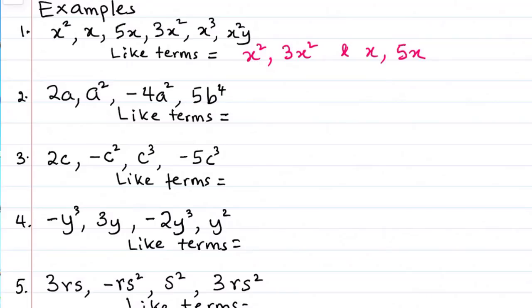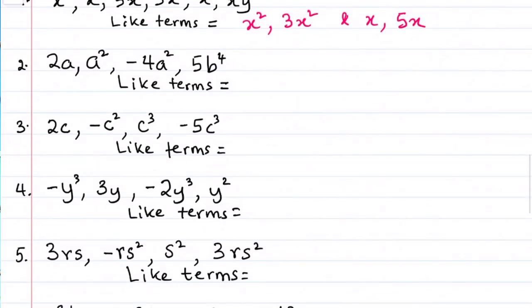So let's look at example number two. We have 2a, a squared, minus 4a squared, and 5b raised to the power of 4. So we want to use our power of observation here.